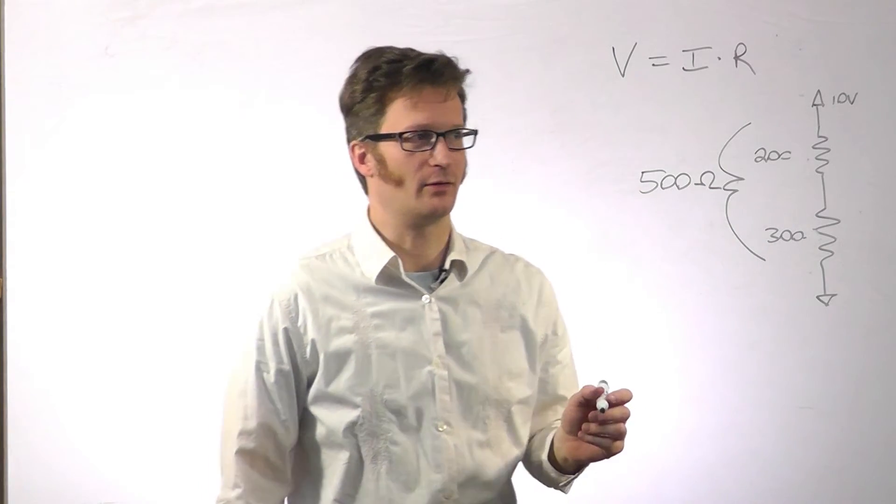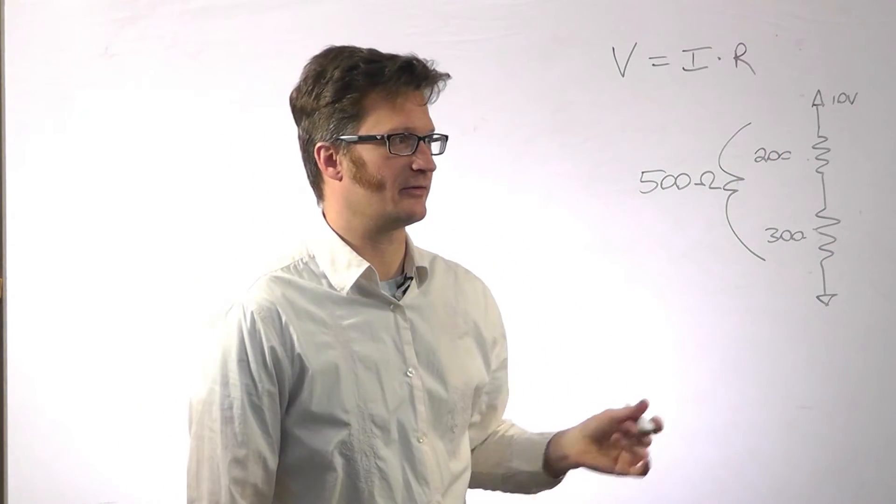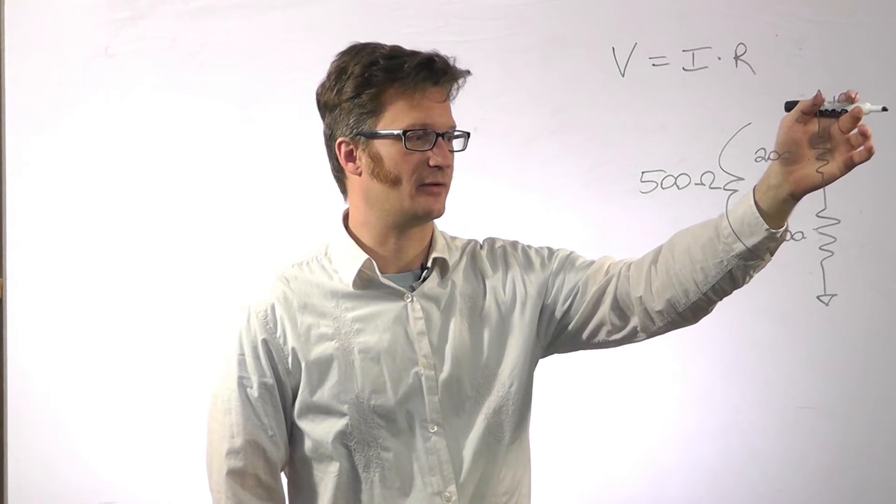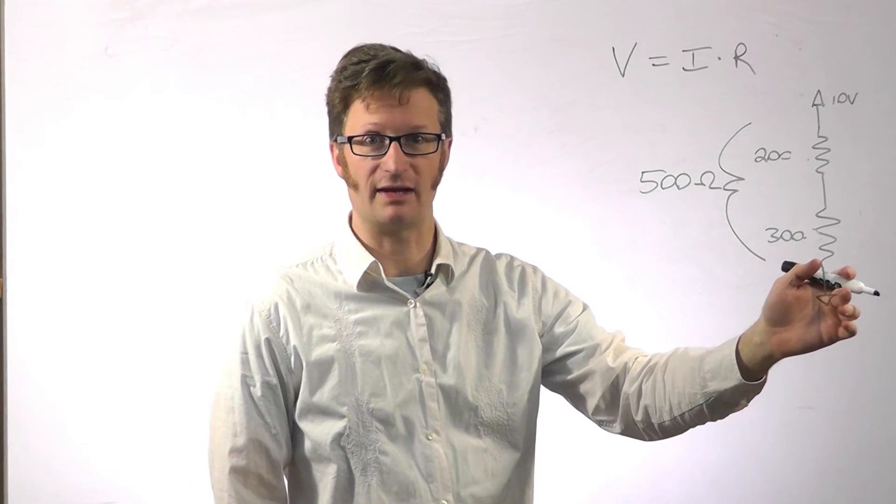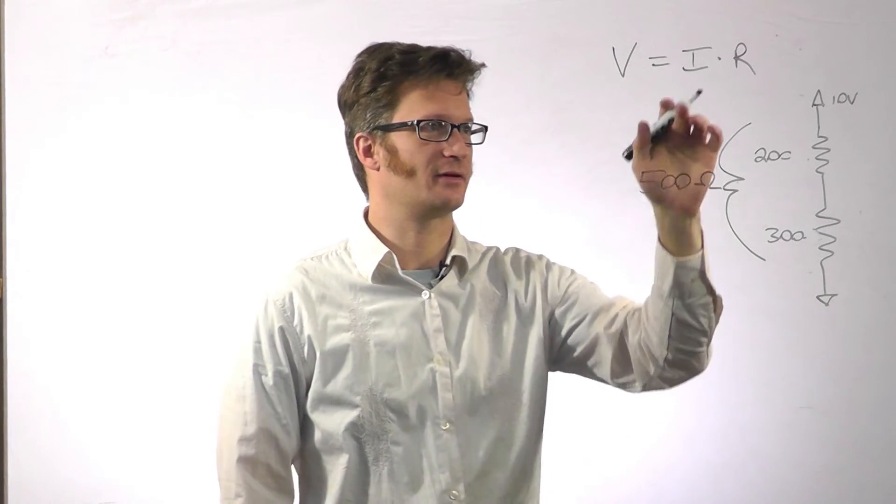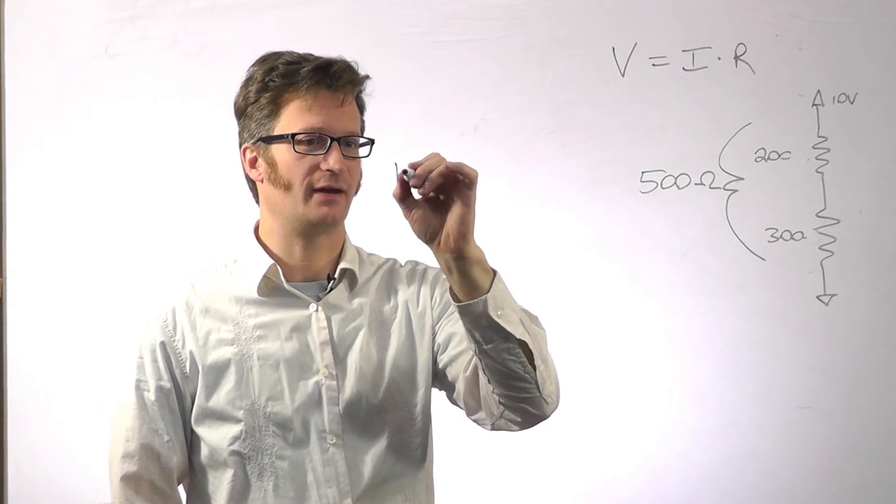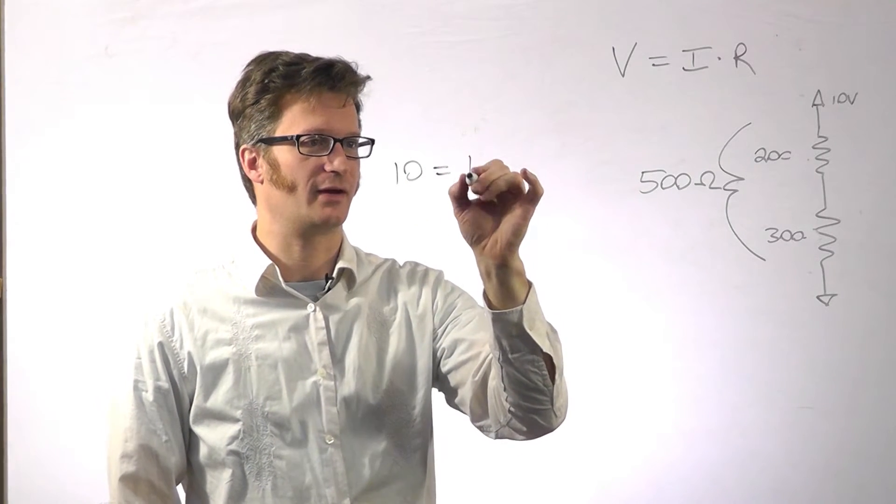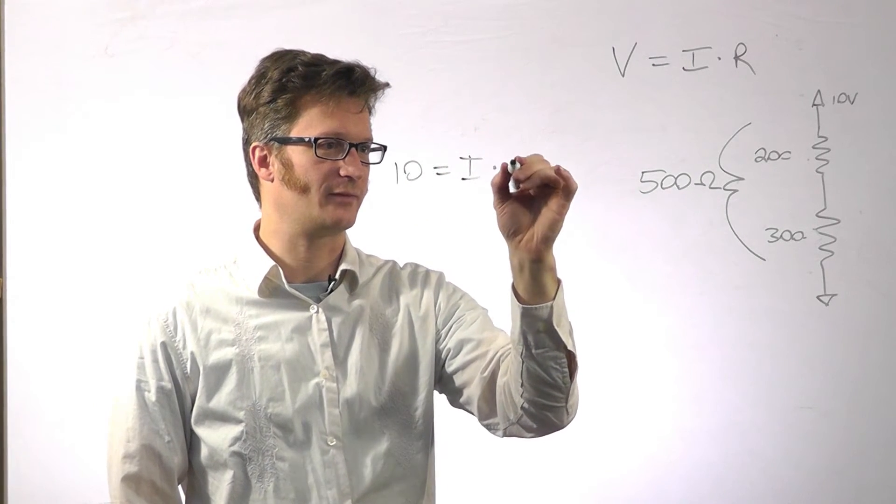So let's figure out the current going through here. We know that our voltage is 10 volts. This is ground or equal to zero. And our resistance is 500 ohms. So we can solve for our current. So 10 equals an unknown I times 500.